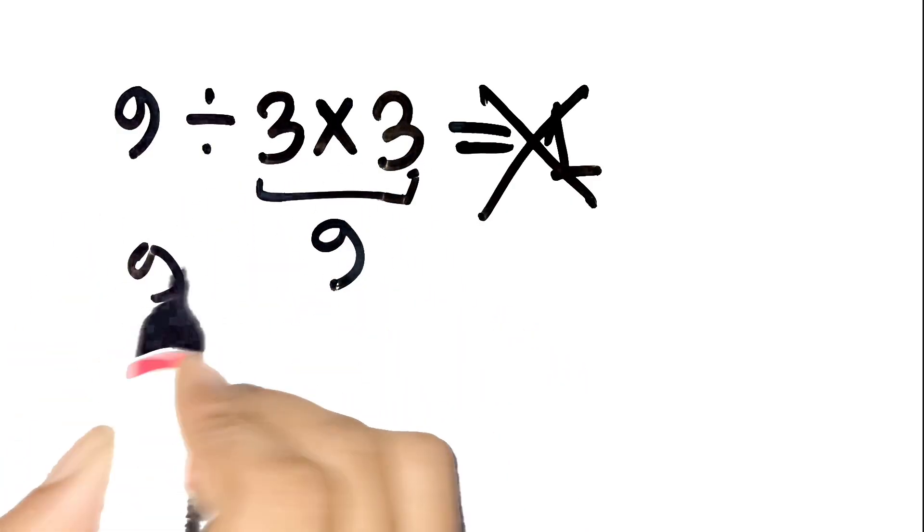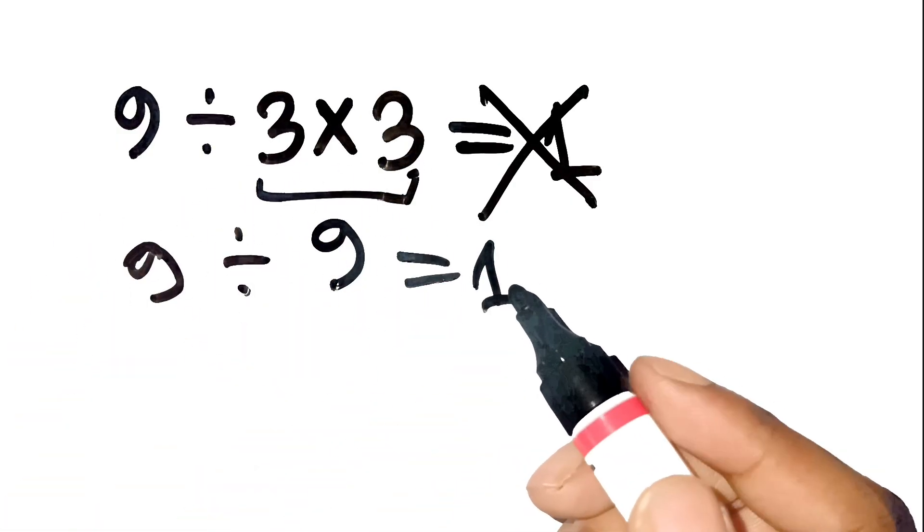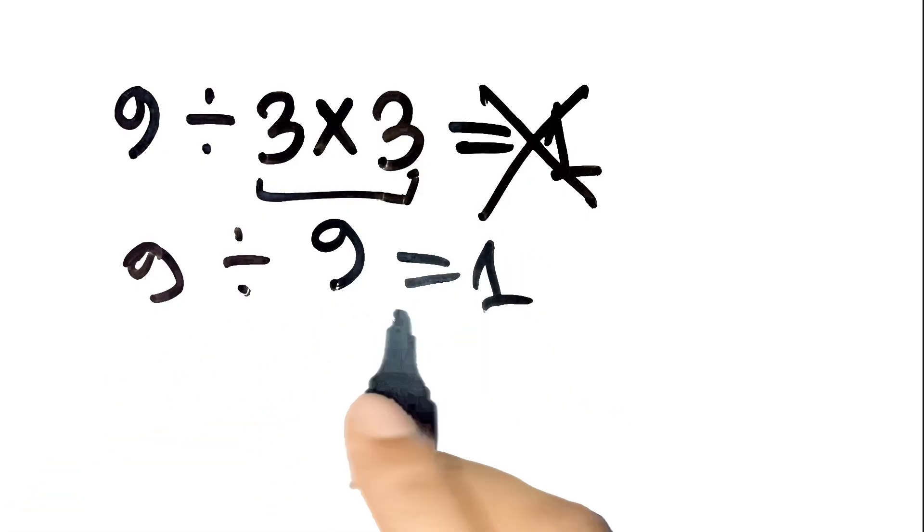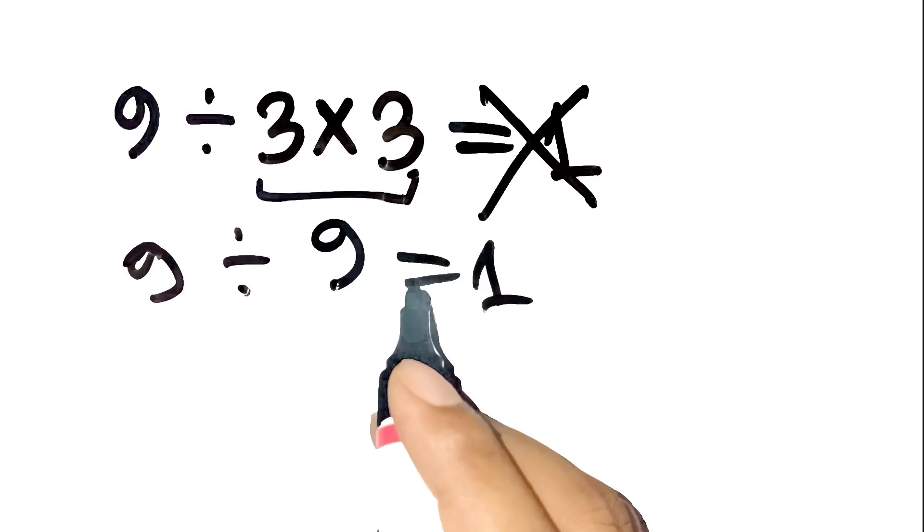3 times 3 is 9, then 9 divided by 9 is 1. Makes sense at first glance, right? But that's actually a common mistake, and it comes from not following the proper order of operations.